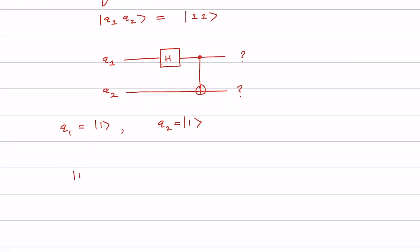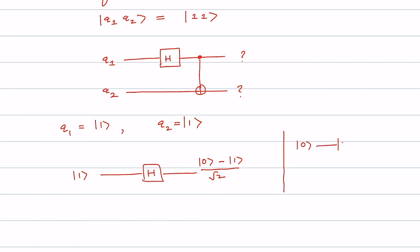We know that if the input to a Hadamard gate is |1⟩, then at the output we get (|0⟩ - |1⟩) / √2. Just recall that when the input is |0⟩, at the output of the Hadamard gate we obtain (|0⟩ + |1⟩) / √2 — a superposition state. This particular output is going to be the input of the CNOT gate.